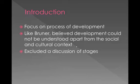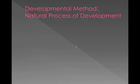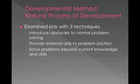Like Bruner, he believed that development could not be understood apart from the social and cultural context. So he thought it was very important to look at what was going on around children socially and culturally. And he didn't really talk about stages like Bruner and Piaget did. His developmental method was focused on what he called the natural process of development, and he tended to examine children using three different techniques.